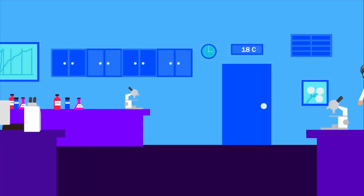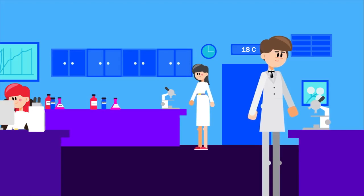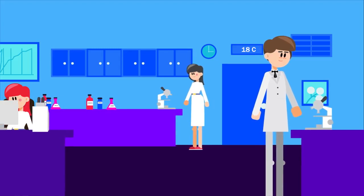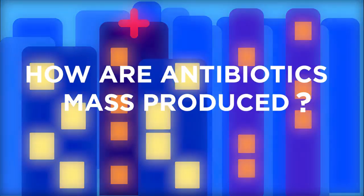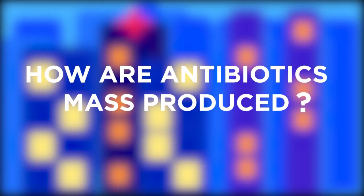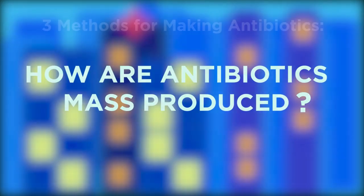Other scientists then worked on penicillin further so that it could be produced as a drug. And by the 1940s, it was being mass-produced by pharmaceutical companies. So how are antibiotics mass-produced? There are three methods of making antibiotics.